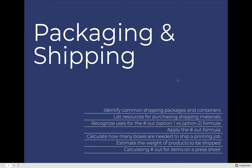The first lesson in unit two is packaging and shipping. In this lesson, we'll identify common shipping packages and containers used in the commercial printing industry. We will list resources for purchasing shipping materials if you ever have a need for that. We will recognize uses for the number out formula, which we call the number out option one versus option two formula.